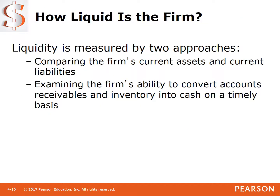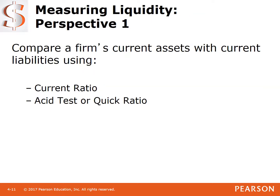How liquid is the firm is measured by two approaches. First, we compare the current assets of the company — those assets expected to be used in the coming year — with current liabilities, those we have to pay this year. So we're comparing what we have to pay with what we have to pay it with. We also examine the firm's ability to convert accounts receivable and inventory into cash on a timely basis.